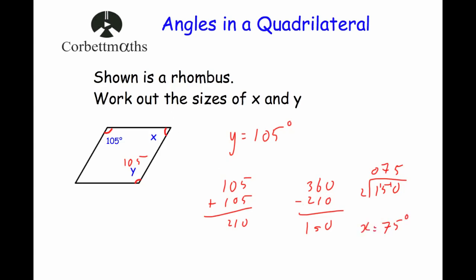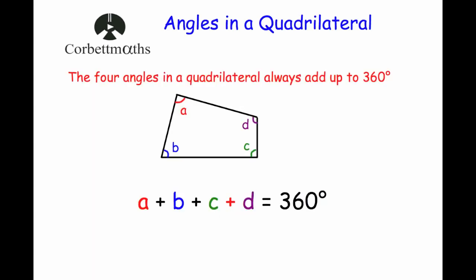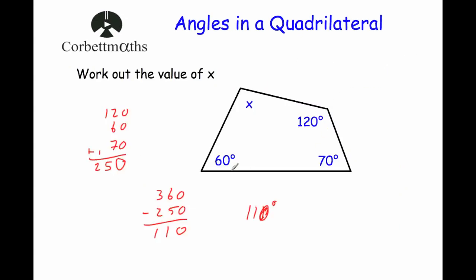The main thing to remember is that the angles in a quadrilateral will always add up to 360 degrees. If you know three of them, just add them up and take away from 360 to find the missing one.